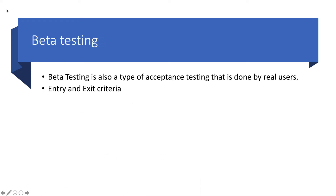Beta testing is also a type of acceptance testing, but it is done by real users. Beta testing is done on the customer side. We enable beta for some customers who are important, who agree to do beta testing, or who are eager to get new features. We tell them: we have enabled these new features specially for you — try it out and give us feedback. Over two weeks or one month, depending on the project, they give feedback like: this looks nice, or this might need to change. That is what we call beta testing.